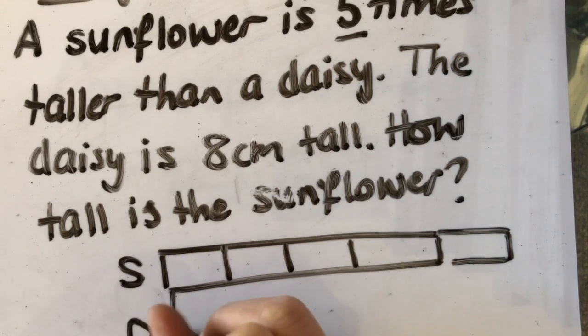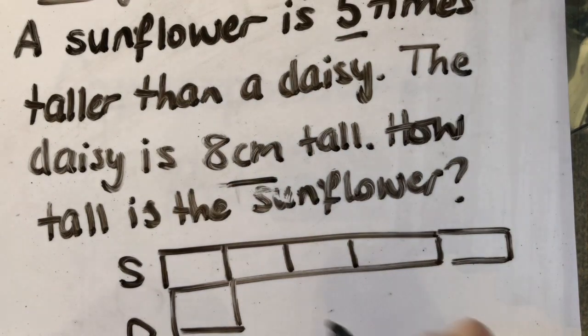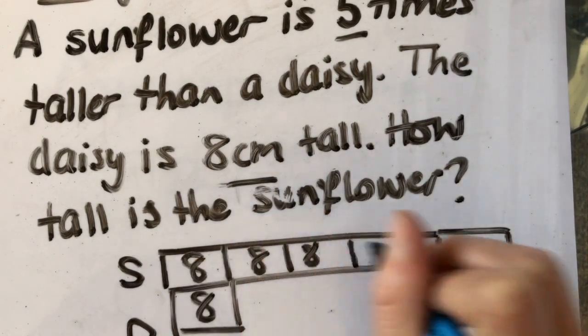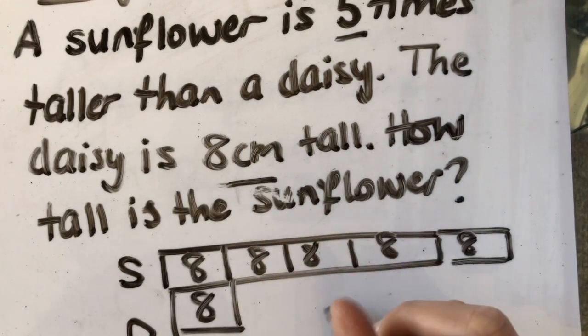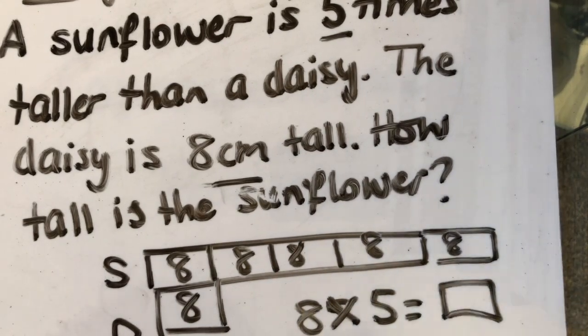Then my daisy, there's my daisy. My daisy is 8 centimetres, so that's 8. So then I can see that each of these must be 8. So 8 times 5 is going to give me that unknown answer.